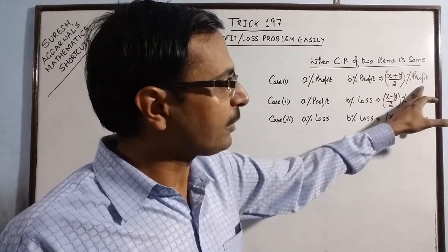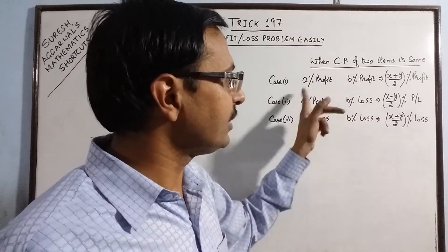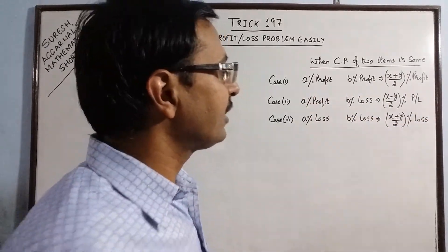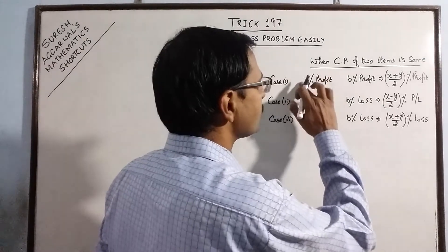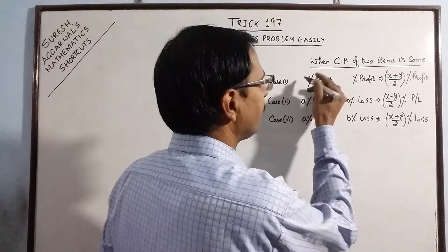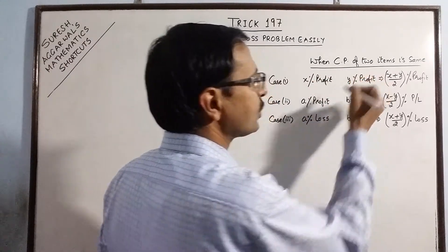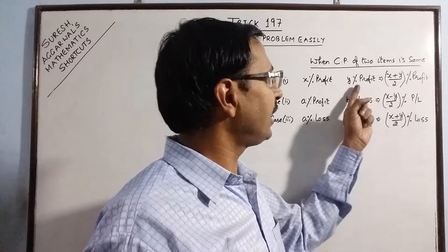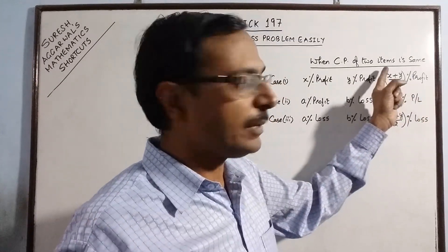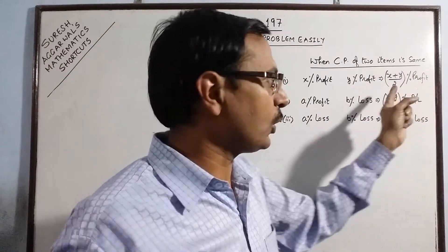So overall profit percentage will be given by the mean of these two. So I have written x and y here. So let us assume this as x and y percent itself. So if you have x percent profit and y percent profit, then overall profit percent will be x plus y upon 2.